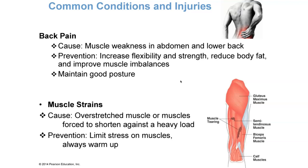Muscle strains occur when a muscle is slightly torn. The diagram shows this tearing. The cause is an overstretched muscle forced to contract against a heavy load, and can also result from poor flexibility or overtraining. Dynamic stretching will help prevent muscle strain by making sure muscles are warmed up and ready. Depending on severity, a muscle strain can take three to seven weeks for full recovery.